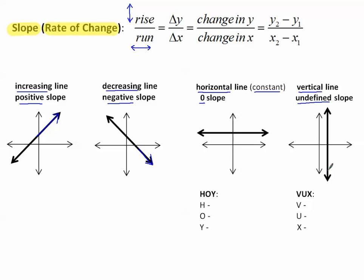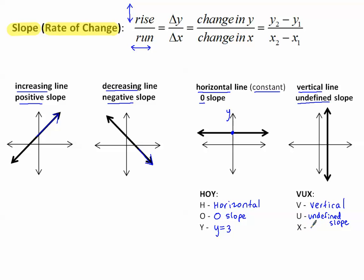Sometimes it's easier to remember HOY and VUX, a little memory trick. For horizontal lines, the H stands for horizontal. In VUX, the V stands for vertical. This helps us remember that a horizontal line has a zero slope, and the equation of a horizontal line will have a Y in it and crosses the y-axis — like y equals 3. A vertical line, U for undefined, has a slope that's undefined. The X stands for crossing only the x-axis, and the equation of that line might be x equals 3. HOY VUX — a nice little trick to help us remember horizontal and vertical line information.